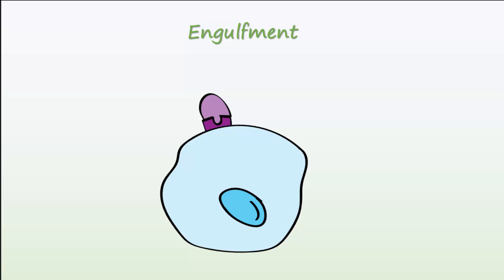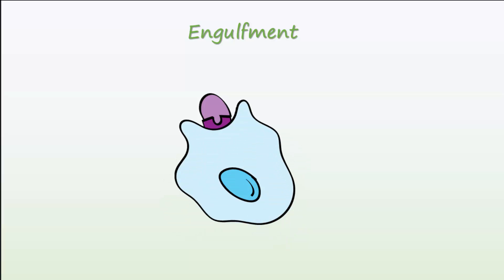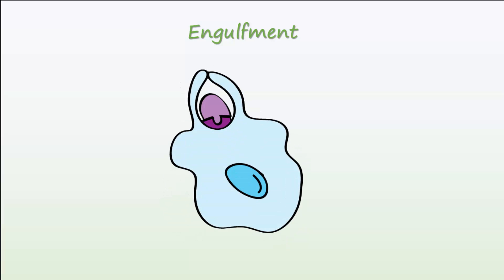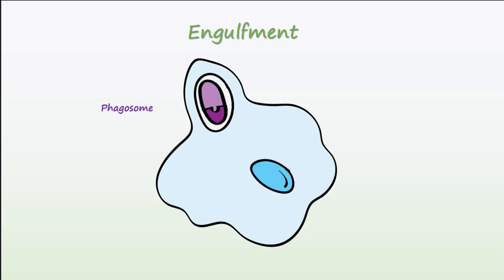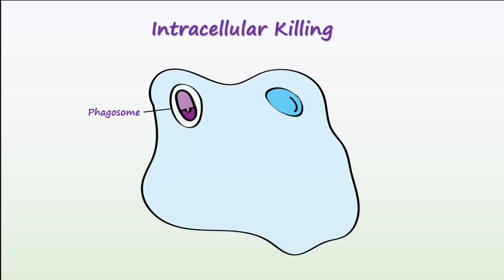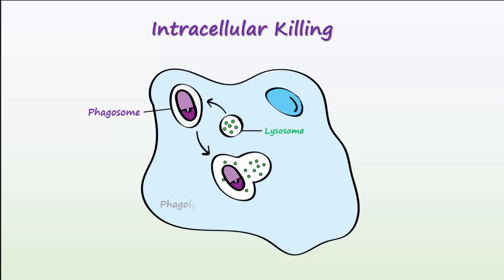During engulfment, extensions of the cytoplasm move around and eventually enclose the particle in a membrane-surrounded phagocytic vesicle, or phagosome. Once inside the cell, the phagosome fuses with the cytoplasmic lysosome, forming a phagolysosome.